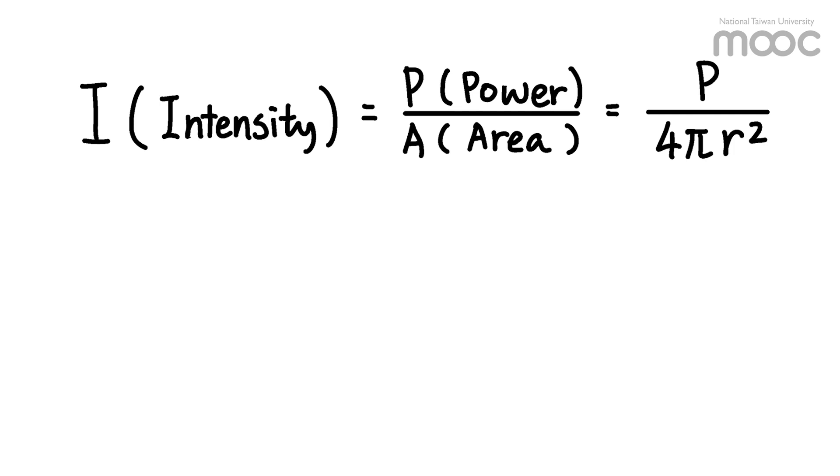The radiated intensity from the Tesla coil is inversely proportional to the square of the distance, which is known as the inverse square law.